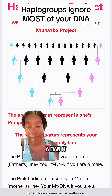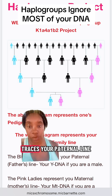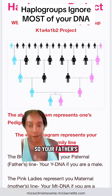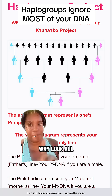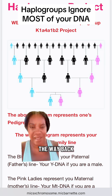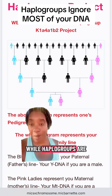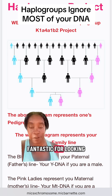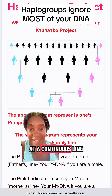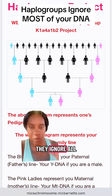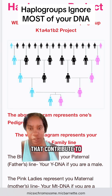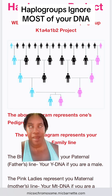If you are a man, it traces your paternal line — your father's father's father, all the way back. While haplogroups are fantastic for looking at a continuous line, they ignore all those other people that contribute to your DNA.